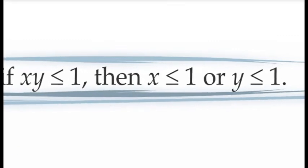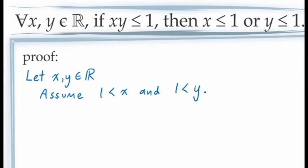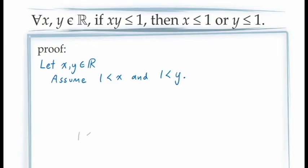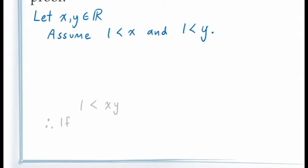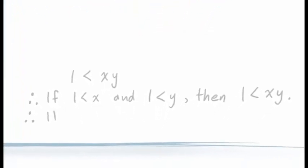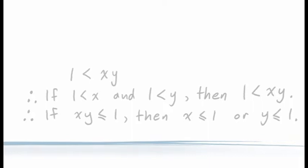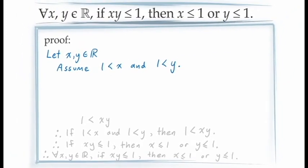Having decided to prove this in its contrapositive form, we make the assumption that the consequent of the conditional statement is false — in other words, we assume that 1 is less than X and 1 is less than Y. Following the proof by contraposition method, our job is now to prove that the antecedent is false — we need to demonstrate that 1 is less than XY. If we're able to do this, then the principle of conditional proof will allow us to conclude: if 1 is less than X and 1 is less than Y, then 1 is less than XY. Writing this conclusion in its contrapositive form gives us the statement we're looking for: if XY is less than or equal to 1, then either X is less than or equal to 1 or Y is less than or equal to 1. Since X and Y are arbitrary, the principle of universal generalization allows us to conclude this holds for all values of X and Y in the real numbers.